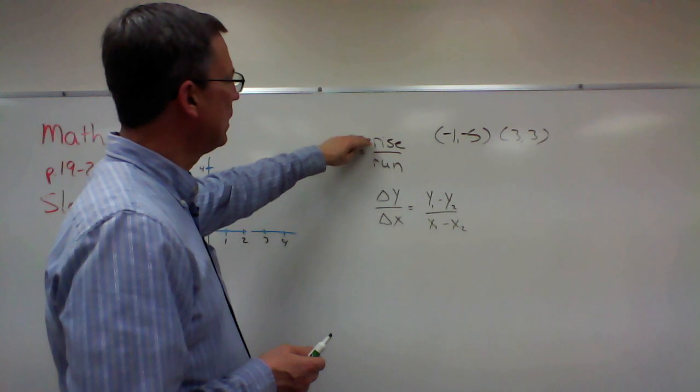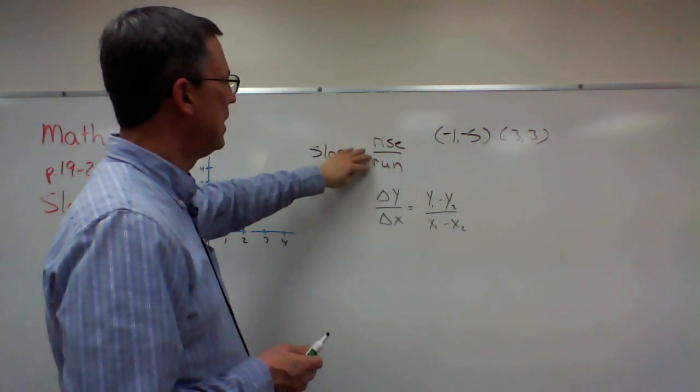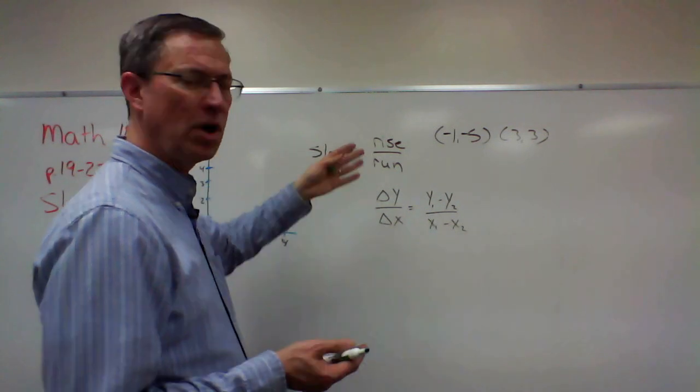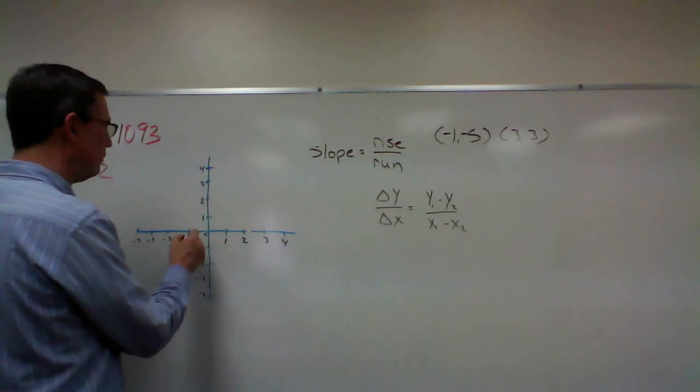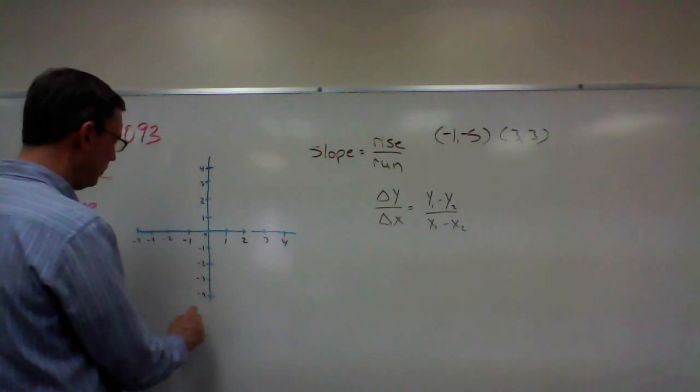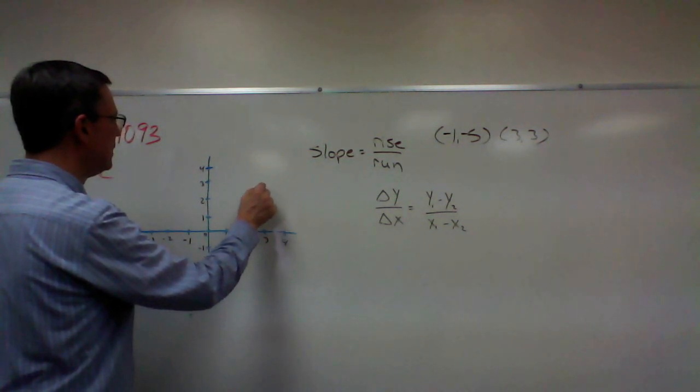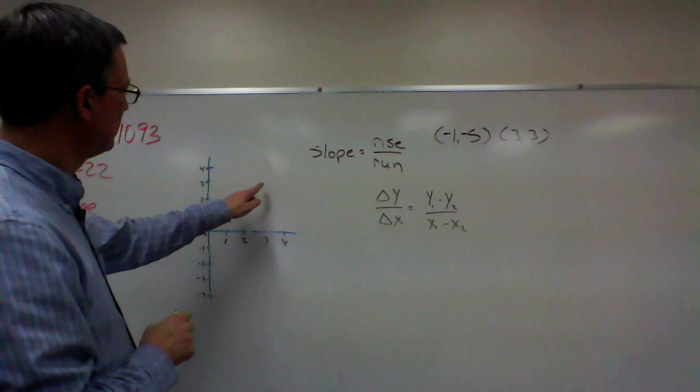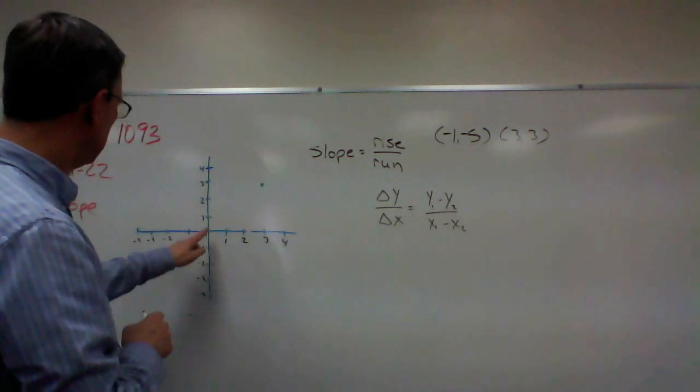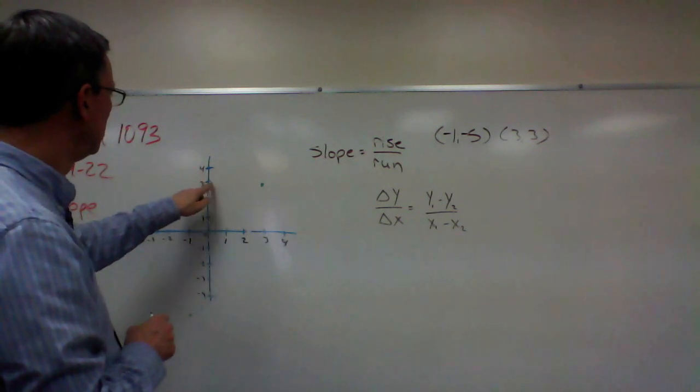So slope is calculated by figuring out the rise first and then the run. And we divide. It's often a fraction. So I'm going to first of all graph negative one, negative five. So that would be down here. And then three, three. So I just graphed these two points, negative one, negative five, and three, three.